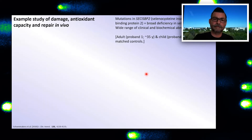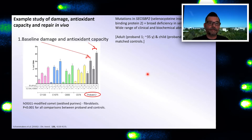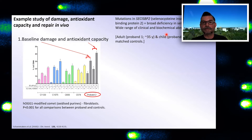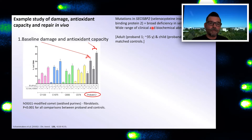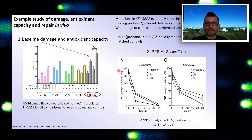We used the comet assay to look at baseline levels of damage and assess antioxidant capacity in two individuals with a genetic deficiency in selenocysteine metabolism, which rendered them particularly susceptible to oxidative stress. We also demonstrated that the deficiency didn't actually affect base excision repair of 8-oxoguanine. In both cases, we used the Holt-modified comet assay.